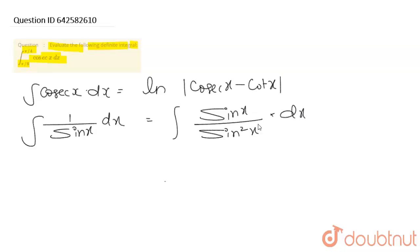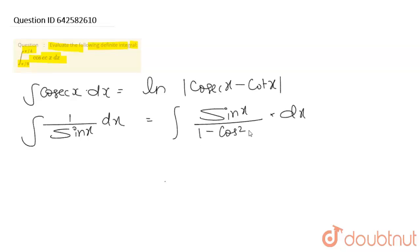अब आपका next step क्या होगा? ठीक है, मैं इसको step by step proof करूँगा। sin²x को लिख सकता हूँ 1 minus cos²x — यह sin²x की identity है। और यह आ जाएगा 1 minus cos²x, तो नीचे a plus b, a minus b का formula बन जाएगा, और आ जाएगा sin x dx।